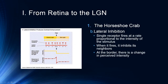With these ommatidial receptors connected by a lateral plexus, this is a model for how parts of our retina function. A single receptor fires at a rate proportional to the intensity of its stimulus — receptors receiving intense light fire at a much higher rate than those receiving dim light. When a photoreceptor is activated, it actually inhibits its neighbors, sending out an inhibitory signal to them.